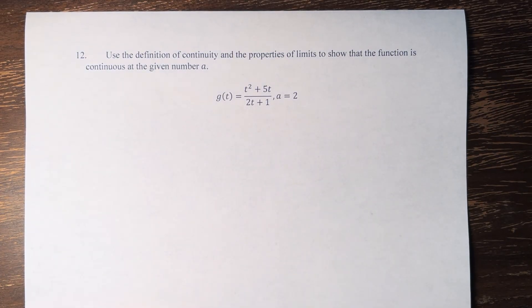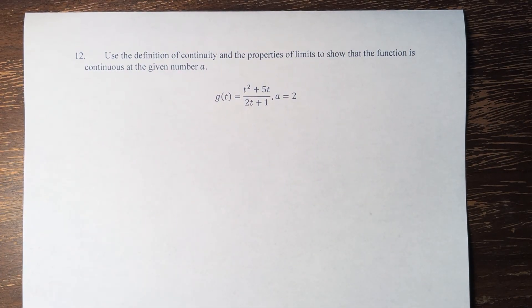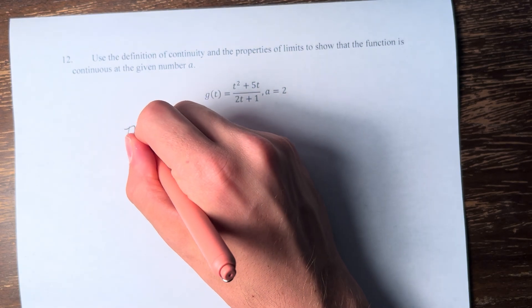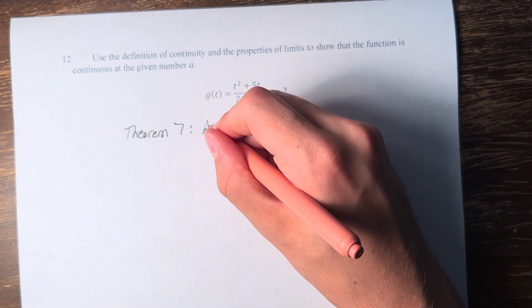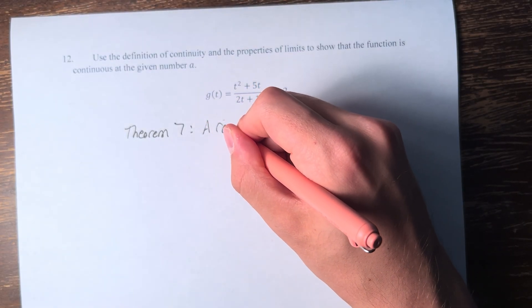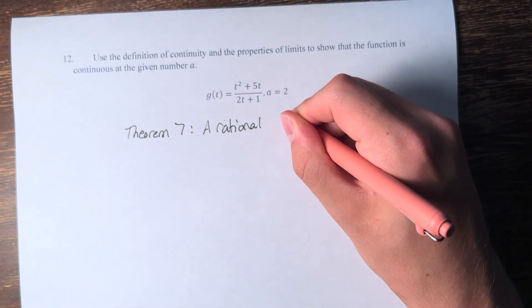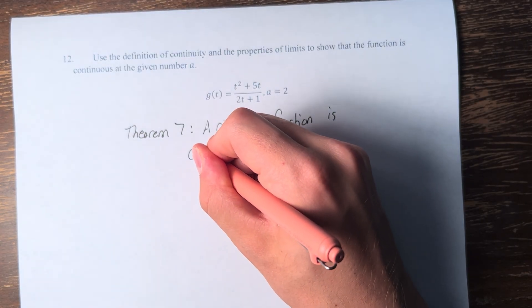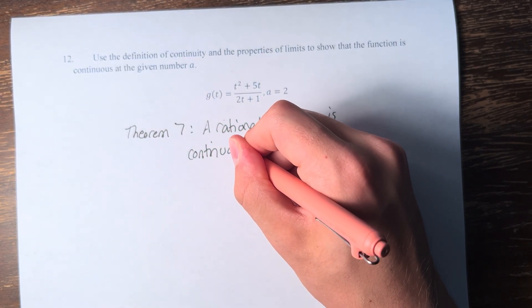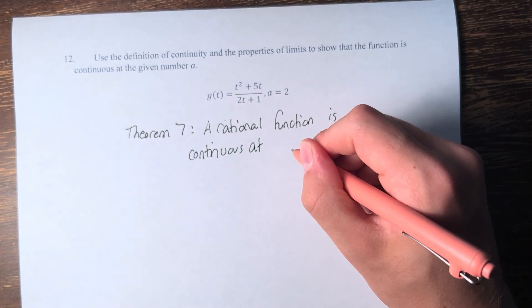And theorem 7 in the book states that a rational function is continuous at every number in its domain.